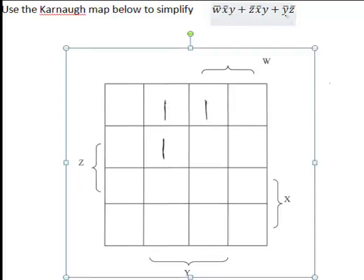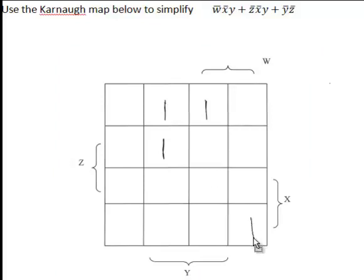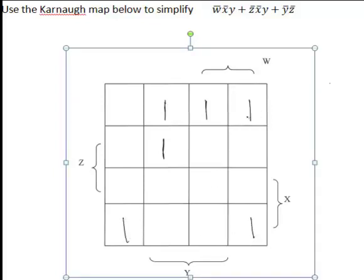Finally, our last term here is ȳ and z̄. Now ȳ is the first and last column. Z̄ is the top and bottom row. So to be in both ȳ and z̄ is actually the four corners here. The next step is we then fill in everything else with zeros.